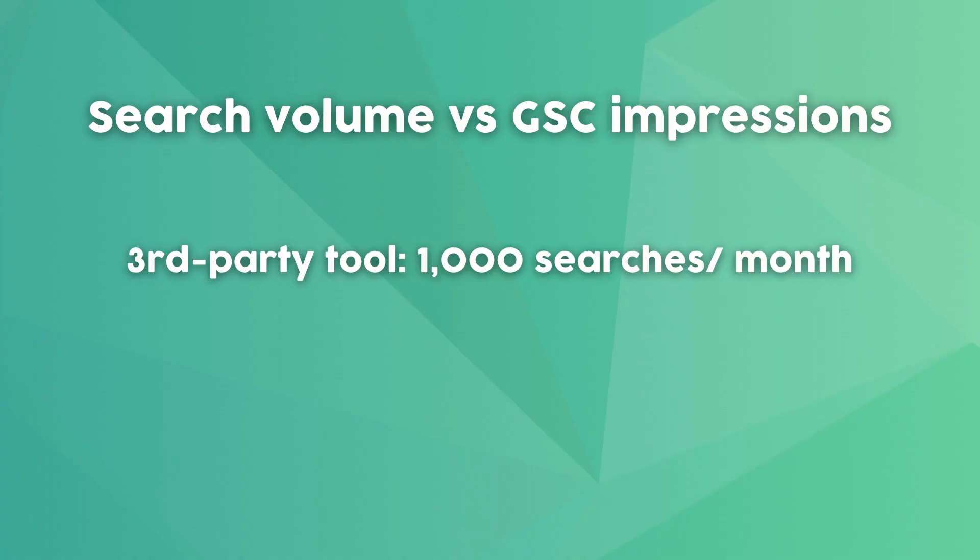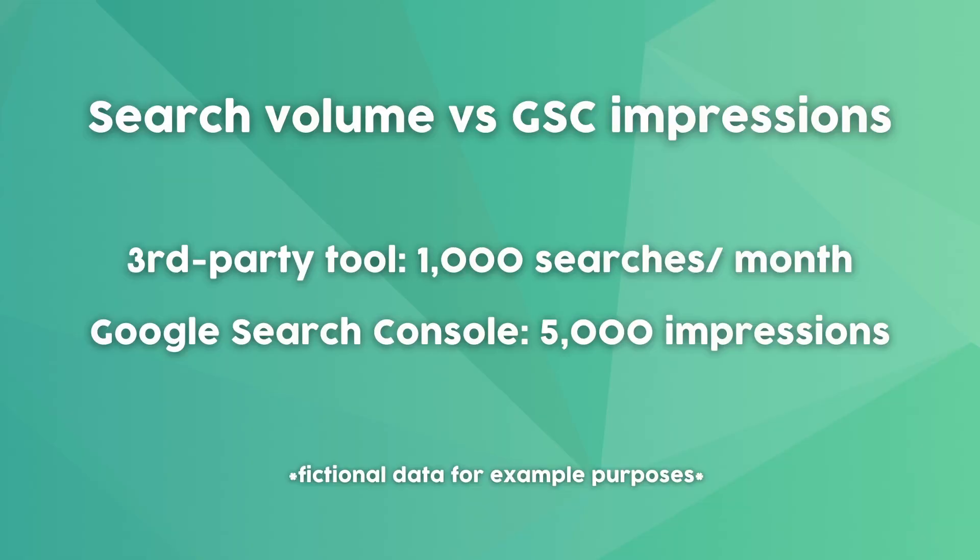These are the keyword ideas you can add to existing content or use to create new pieces. Another good use of Google Search Console for keyword research is looking at keyword impressions. Because this data comes directly from Google, it will be more accurate than search volume from third-party tools. For example, a third-party tool might say a keyword has 1,000 searches per month, but Google Search Console can show you a different number like 5 or 10,000 searches per month — sometimes higher, sometimes lower. This is the power of first-party data.